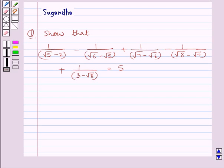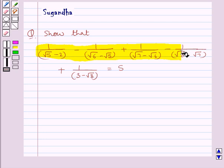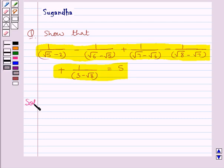Hello and welcome to the session. In this session we discuss the following question which says: show that 1 upon root 5 minus 2, minus 1 upon root 6 minus root 5, plus 1 upon root 7 minus root 6, minus 1 upon root 8 minus root 7, plus 1 upon 3 minus root 8 is equal to 5. Let's move on to the solution.